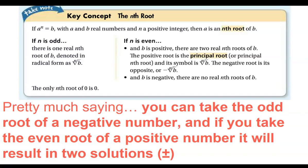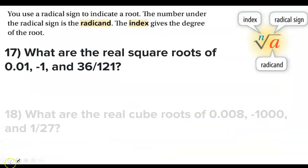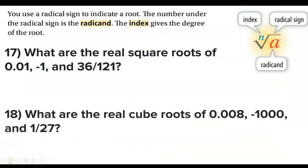So if you square root both sides, we include the plus or minus. If you fourth root both sides, we include the plus or minus. Any even root applied to both sides requires the plus or minus symbol.